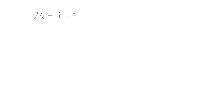Let's start by looking at the problem 28 divided by 7 equals 4. We know, because we know the relationship between division and multiplication, that the number sentence 7 times 4 equals 28 is also in the same fact family. Therefore, we know that 7 and 4 are factors of 28. These two numbers multiplied together give us 28, so they are factors of 28.